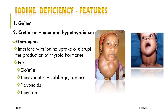Apart from that, goitrogens — substances which interfere with iodine uptake and thereby disrupt the production of thyroid hormones — also result in hypothyroid states. Cabbage and tapioca are very rich in these goitrogens, that is thiocyanates, and thereby they may cause a hypothyroid state.